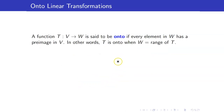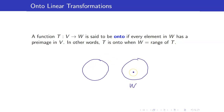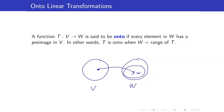Let us now turn our discussion to onto functions. A function is said to be onto if every element in W has a pre-image in V. If I get an arbitrary element in W, I am sure that there is a corresponding pre-image — there is an element in V that goes to this element in W. In other words, T is onto when the entire set W is equal to the range of T. In general, the range of T is just a subspace of W; if T is onto, this entire W must be the image of T.